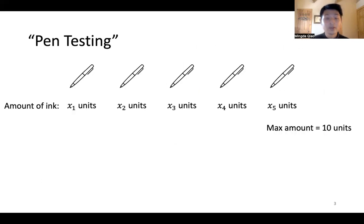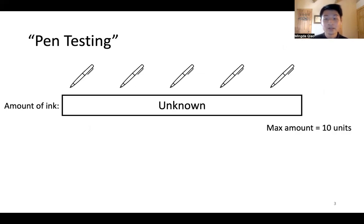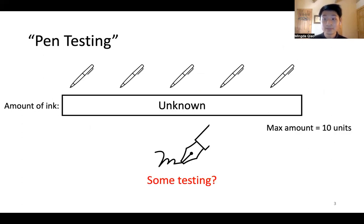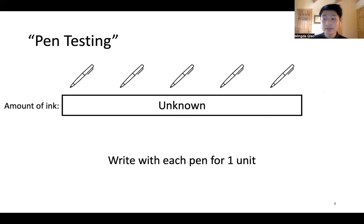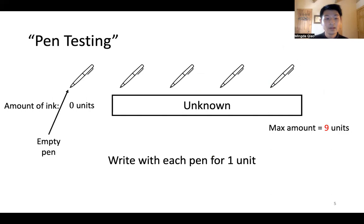So the problem is as follows. Suppose we have a couple of pens and they hold different amounts of ink x1 to xn, and these amounts are not known to us. We want to pick a pen that has a maximum amount of ink, and let's say the maximum amount is 10 units of ink. One natural thing to do is to test each pen by writing with it — test each pen for one unit of time and see what happens. One thing that might happen is that one of the pens becomes empty, so we know we shouldn't pick it. But still, we have no idea about the remaining amount of ink in each of the other four pens that pass the test. We also know that this testing already reduced the amount of ink in the maximum pen and it becomes 9 units instead of 10 units.